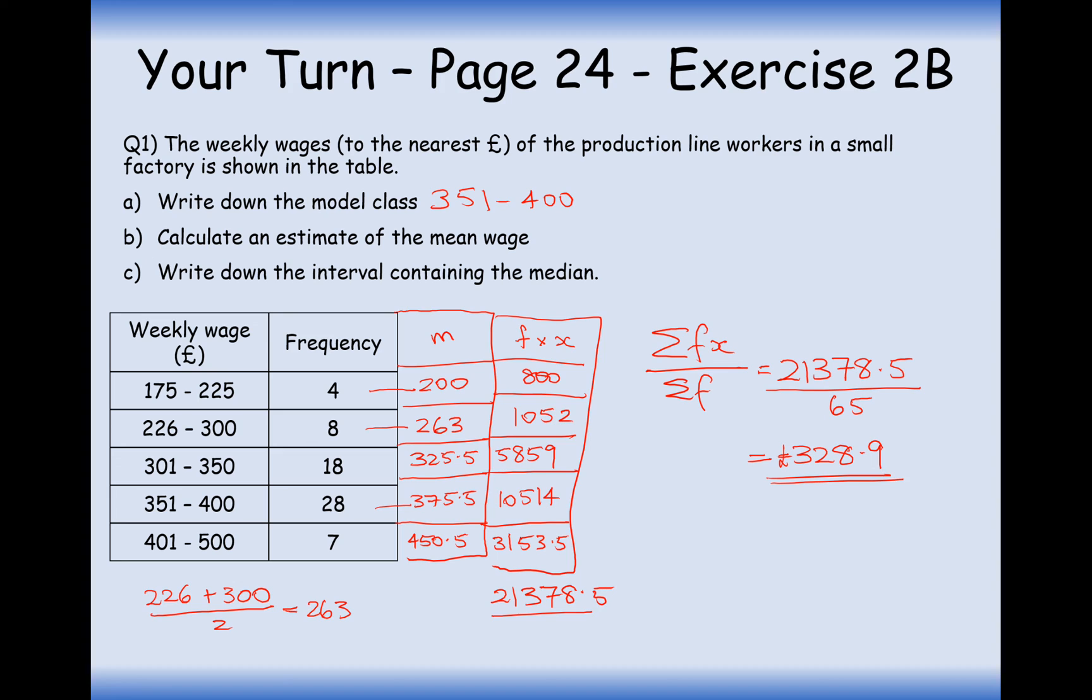So the mean wage is 328.9. Now it does say here an estimate, but this is effectively what we've got as the best estimate. We've put each of the wages into a group, so hence we've reduced the accuracy of the data, so hence this is our most accurate approximation.